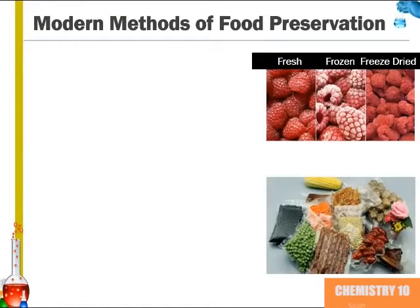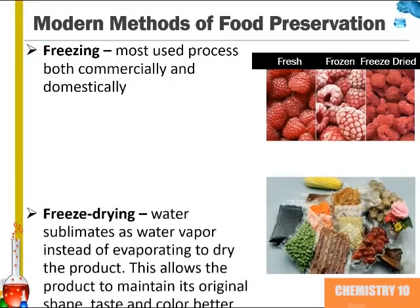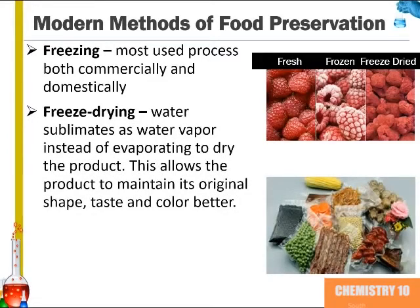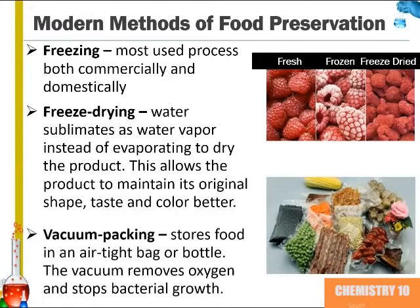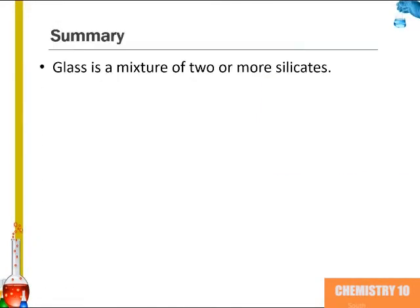Some modern methods of food preservation include freezing, which is the most used process both commercially and domestically; freeze drying, in which water sublimates as water vapor instead of evaporating to dry the product — this allows the product to maintain its original shape, taste, and color better; and finally vacuum packing, which stores food in an airtight bag or bottle, where the vacuum removes oxygen and stops bacterial growth.